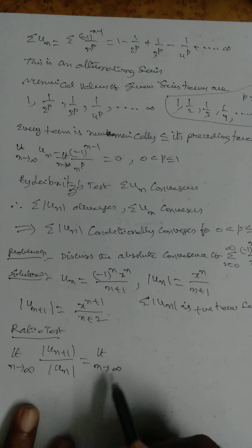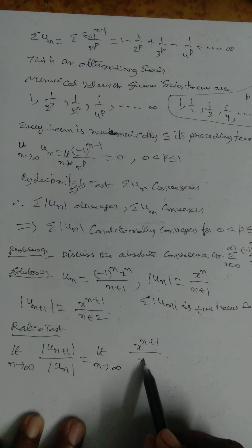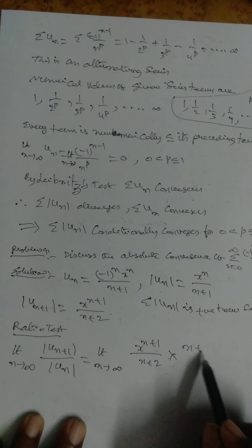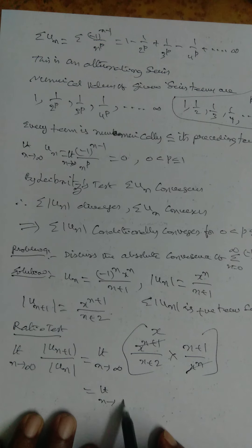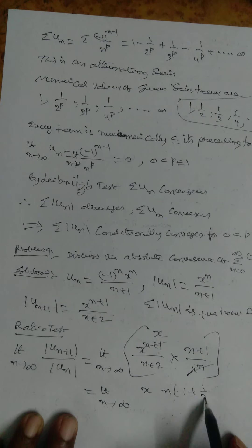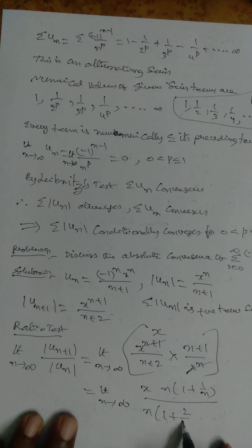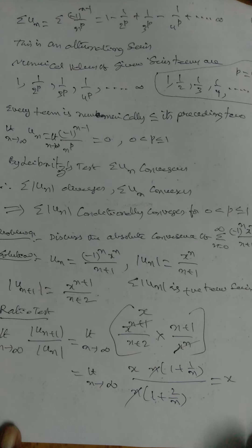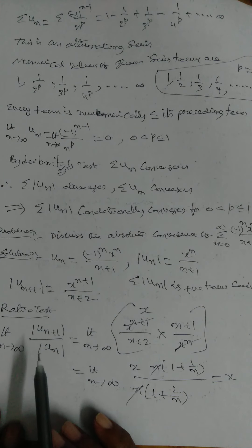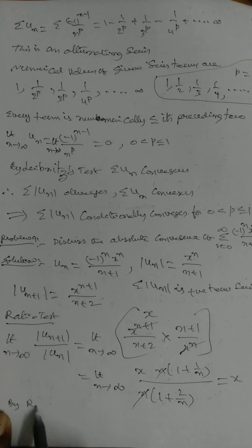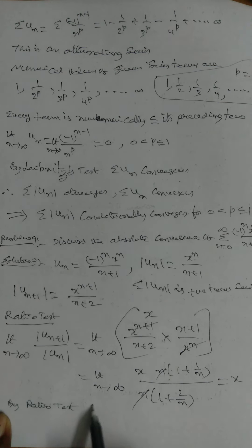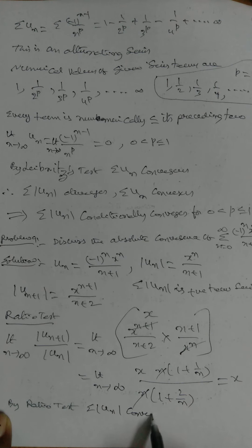lim(n→∞) [x^(n+1)/(n+2)] · [(n+1)/x^n]. The x^n cancels, giving x times (n+1)/(n+2). Taking the limit as n→∞, we get x. So absolute convergence requires σ|u_n| to converge; by ratio test σ|u_n| converges for |x| < 1.